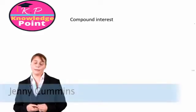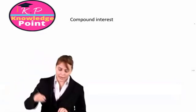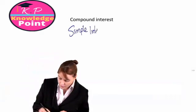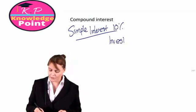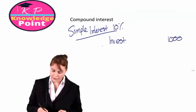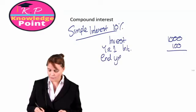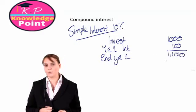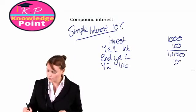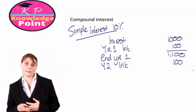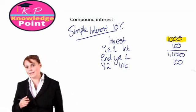In the previous session we looked at simple interest. In this session we are going to consider compound interest. As a reminder, with simple interest, if we invest at 10% and invest a thousand dollars, we will earn year one interest of a hundred dollars. So at the end of year one the value of our investment is 1,100. In year two the interest earned will also be a hundred dollars, because with simple interest the interest is always calculated based on the original sum invested.